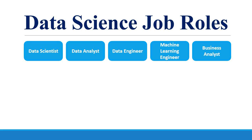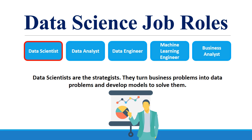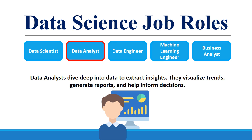Now let's talk about different roles in data science. There are several roles, but the key roles include data scientist, data analyst, data engineer, machine learning engineer, and business analyst. Data scientists are the strategists — they look after the whole data science process from beginning till end. Data analysts are more towards the exploration and visualization side; they deep dive into the data to extract insights, visualize trends, generate reports, and help to inform decisions.